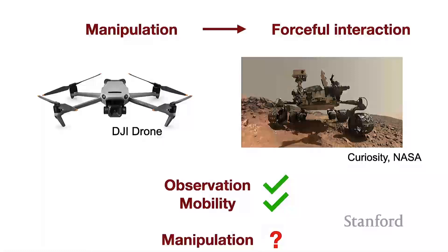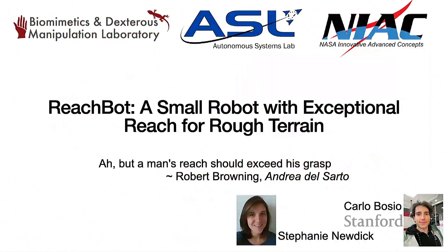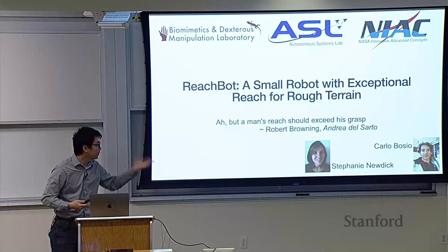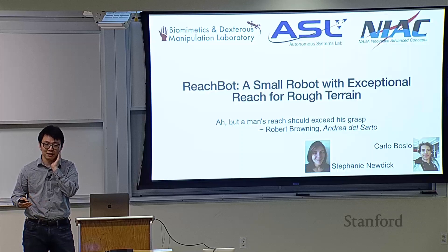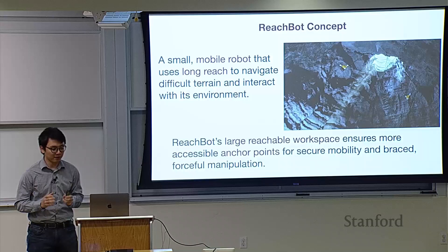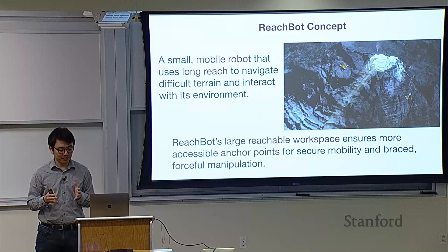I want to move on to the second part of this talk. Let's talk about planetary exploration. Here I have a picture of the Curiosity. What I want to propose is our new robot design called ReachBot. It's a small robot with exceptional reach for rough terrain. This is a collaboration between our lab, BDML, and ASL over at AeroAstro, with collaborators Stephanie Newdick, who is a student in ASL, and Carlo, who was an exchange student in our lab and now he's a PhD student at Berkeley.